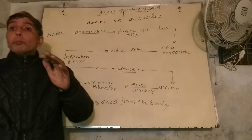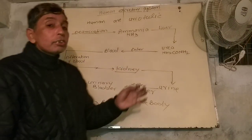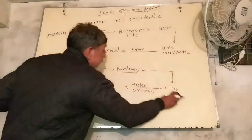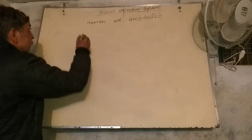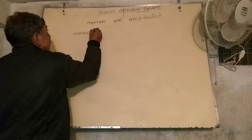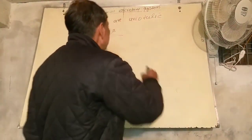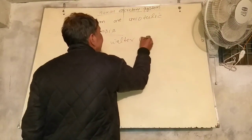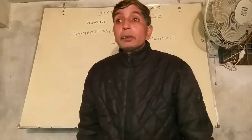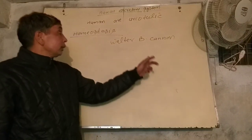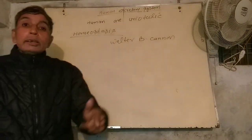Homeostasis is maintained by the kidney. Homeostasis is a term proposed by Walter B. Cannon. It means the maintenance of the internal environment. The kidney forms a key role in homeostasis.